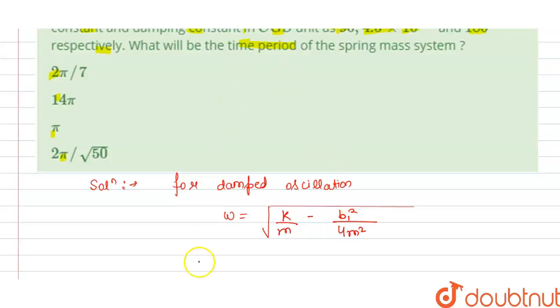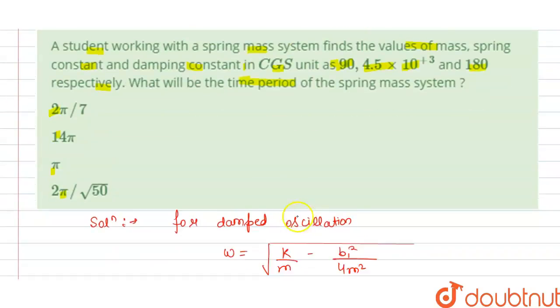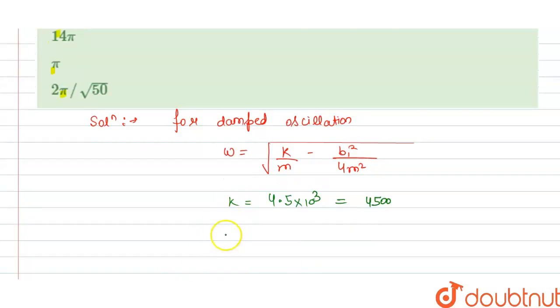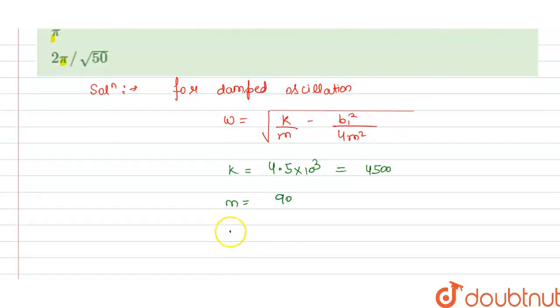We have all values given here, so k is given to us as 4.5 into 10 power 3, so we can write this as 4500. This is our spring constant. Mass is given to us as 90.